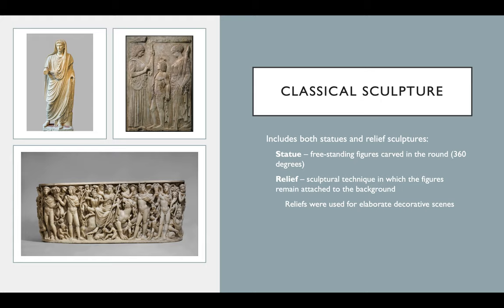When I say classical sculpture, I'm talking about two different styles. A statue is a freestanding sculpture — you can walk around it 360 degrees, and it is carved in the round. And then we have relief sculptures, which are scenes that are still attached to the background. In this particular example of a relief sculpture, the scene is very shallow — carved in a very shallow way. We would call this a low relief. And here on this sarcophagus, the scene is almost detached from the background, and in this instance we would call it a high relief.